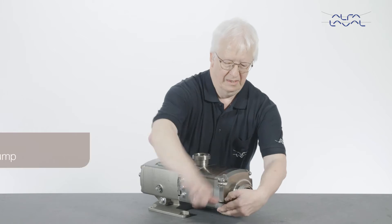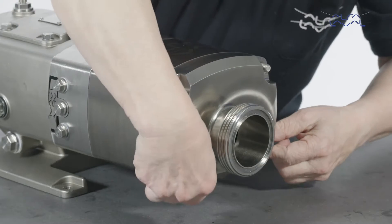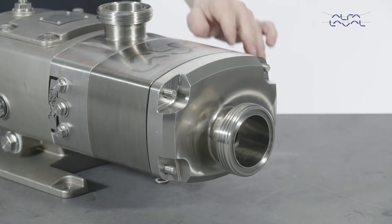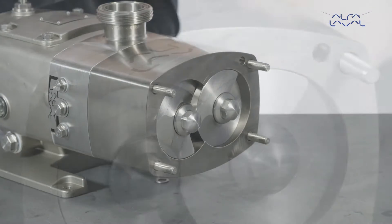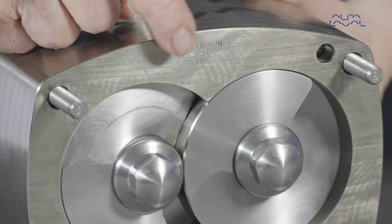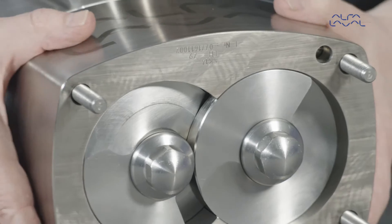Start by removing the pump cover nuts, washers, front cover and front cover elastomer. Then remove the pump casing. Please note the position of the marking.